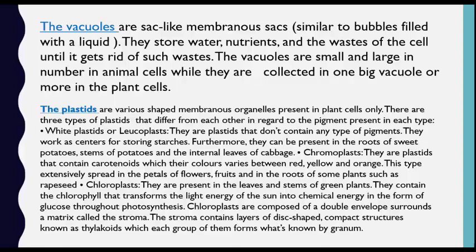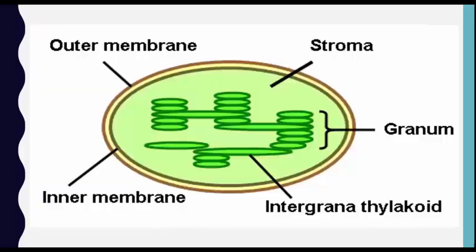Chloroplasts are composed of a double envelope surrounding a matrix called the stroma, which contains layers of disc-shaped compact structures known as thylakoids. Each group of thylakoids forms what is known as a granum. As shown in this figure, the chloroplast contains an inner membrane, outer membrane, the stroma, the granum, and the thylakoid.